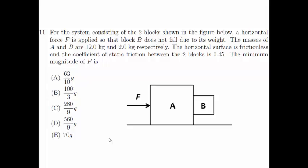The options are A: 63 over 10 G, B: 100 over 3 G, C: 280 over 9 G, D: 560 over 9 G, or E: 70 G.